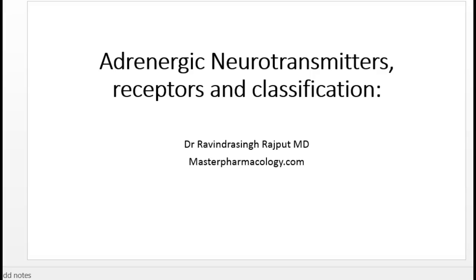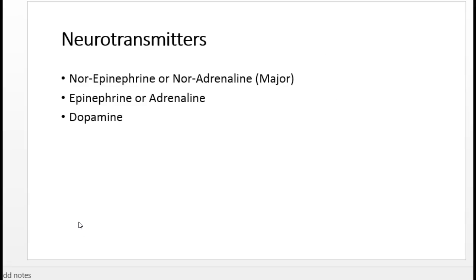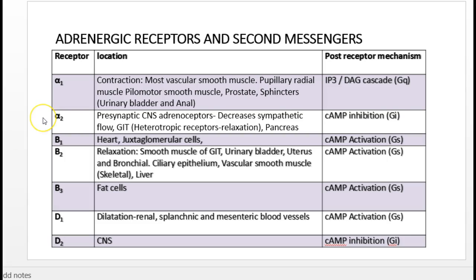In this session we are going to discuss adrenergic neurotransmitters, the receptors and adrenergic system, their functions, and classification of adrenergic agents. The major neurotransmitter in the adrenergic system is norepinephrine or noradrenaline, released at all sites of adrenergic neurons. Other minor neurotransmitters include epinephrine or adrenaline, dopamine, and acetylcholine.